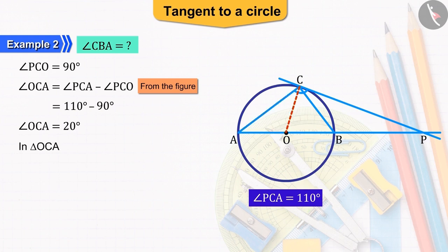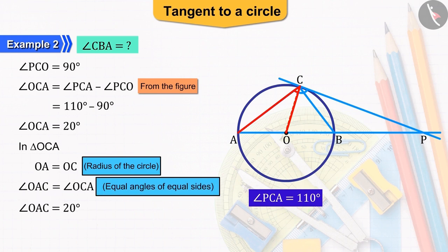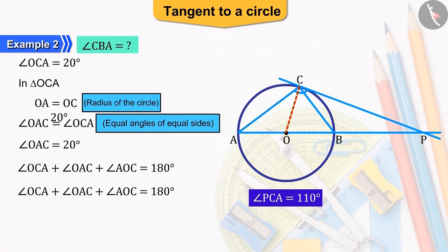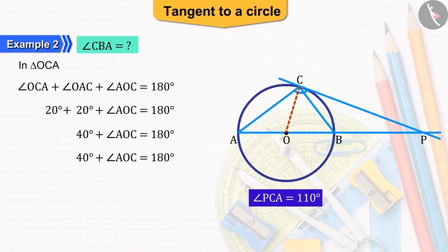Now, in triangle OCA, the sides OA and OC are equal being the radii of the circle. So, angle OAC and angle OCA will also be equal. We know that the sum of the three angles of a triangle is 180 degrees. Which gives us the angle AOC equal to 140 degrees.